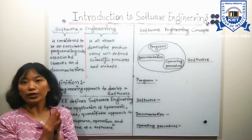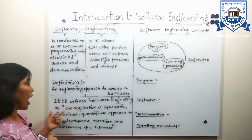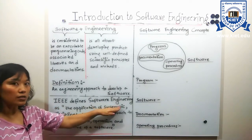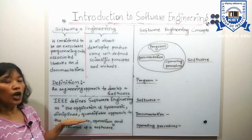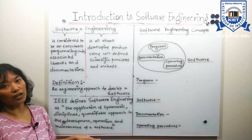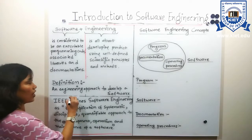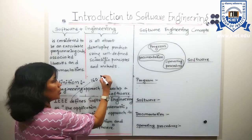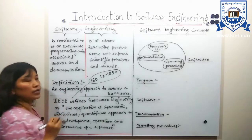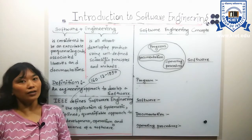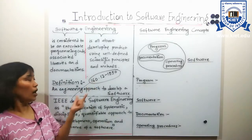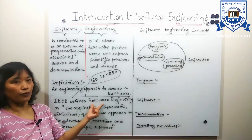From these two definitions, we can understand what software engineering would be. IEEE defines software engineering as the application of a systematic, disciplined, quantifiable approach to the development, operation, and maintenance of software. This is defined in IEEE standard 610.12-1990, where IEEE stands for the Institute of Electrical and Electronics Engineers.